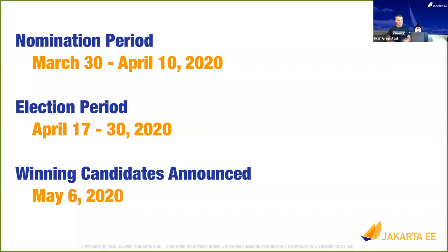Some key dates: the nomination period is open and it's open until April 10th. The election will start on April 17th and last for two weeks, and the winners will be announced at the beginning of May.